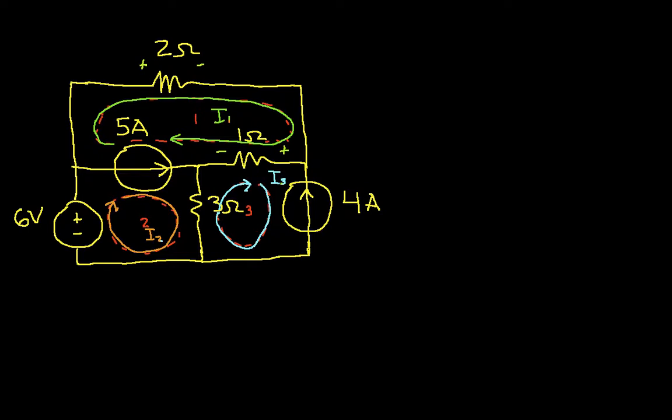Similarly, if I look at mesh 2, I can figure out what the voltage across the 3 ohm resistor is, I know the voltage across the 6 volt source, but I don't know the voltage across the current source again, the 5 amp current source. So that actually complicates things quite a bit.